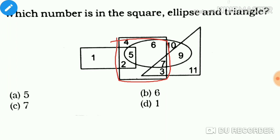So, we have ellipse and square in common. What number is in the square? I have to find the answer.